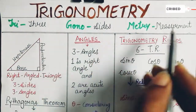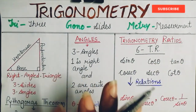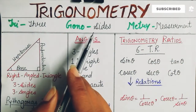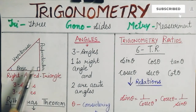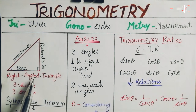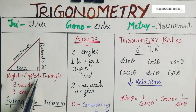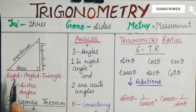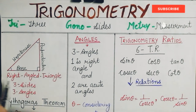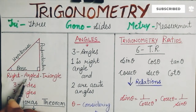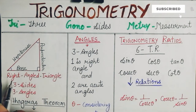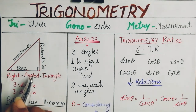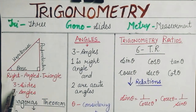So we will learn about all three sides of any triangle and their measurement. Trigonometry works on a right angle triangle. A right angle is a 90 degree angle, so we will work on a right angle triangle which has three sides and three angles.